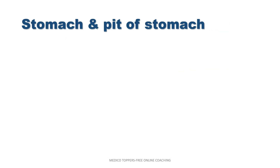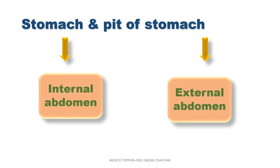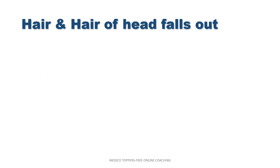Next, stomach and pit of stomach. As a part of an organ of the body, stomach is given under internal abdomen, but pit of stomach is in external abdomen. So: stomach — internal abdomen; pit of stomach — external abdomen.